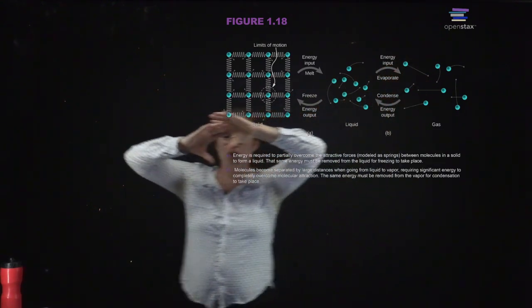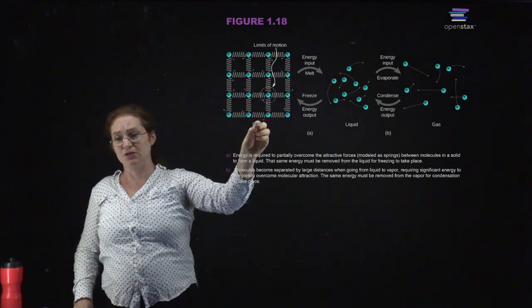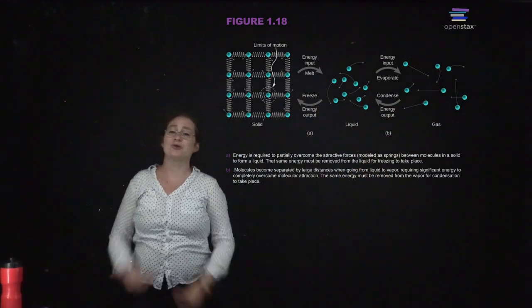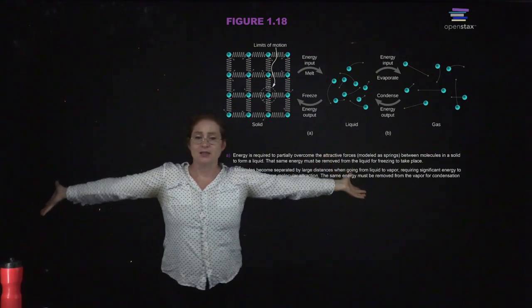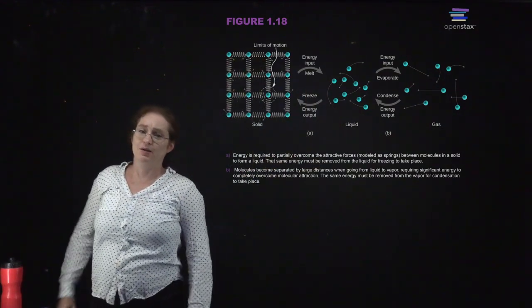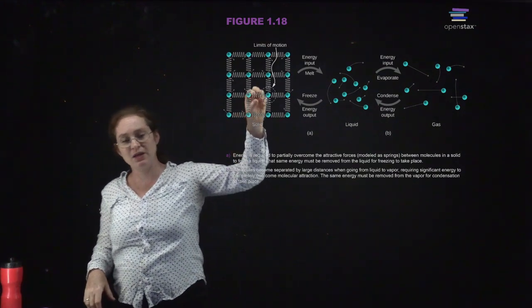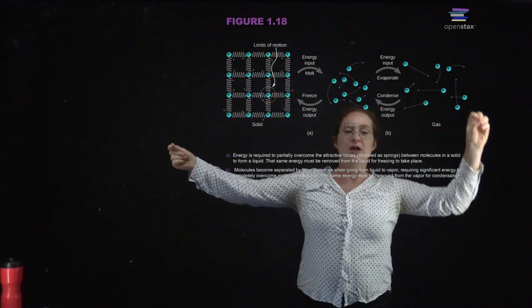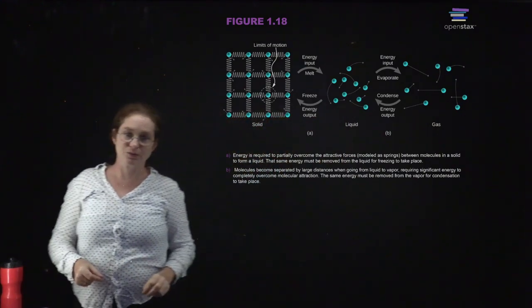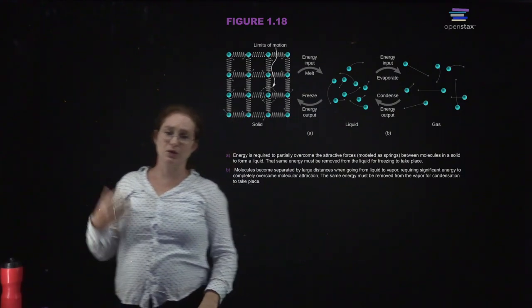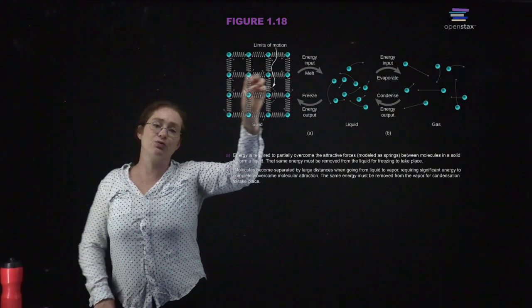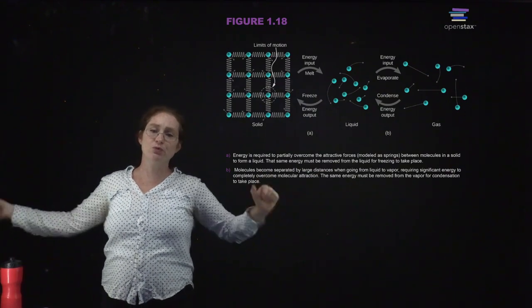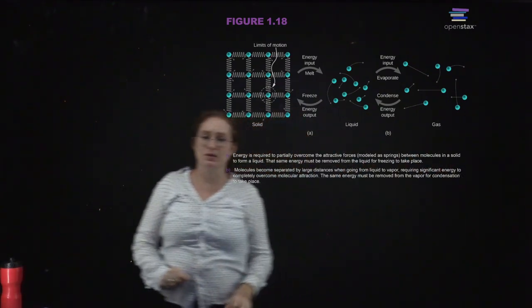In a liquid, the atoms and molecules are still interacting heavily with neighbors, but which specific neighbors changes a lot as they move around. As you heat the system further, you're adding a lot of energy to the atoms and molecules and they start moving around and bouncing off the walls — like a room full of toddlers. In a gas, the average separation between atoms and molecules is much larger than the sizes of the atoms and molecules themselves. As you go from solid to liquid to gas, you're adding energy so that molecules start moving more and the average separation distance increases.